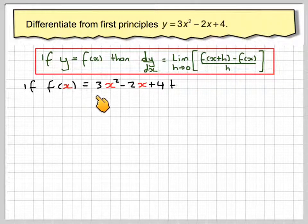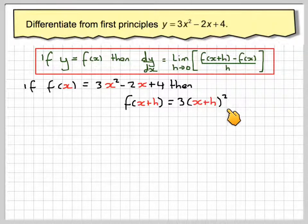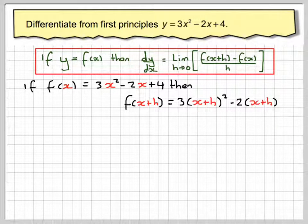If f of x equals 3x squared minus 2x plus 4, then f of x plus h will be, instead of x, we put x plus h. So we get 3 times x plus h all squared, minus 2 times x plus h, plus 4.